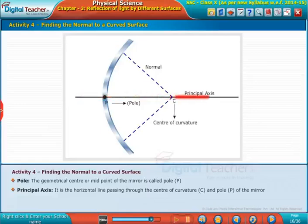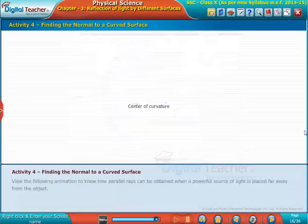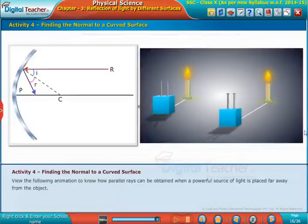Radius of curvature R is the distance between pole P and the center of curvature C of the mirror. View the following animation to know how parallel rays can be obtained.